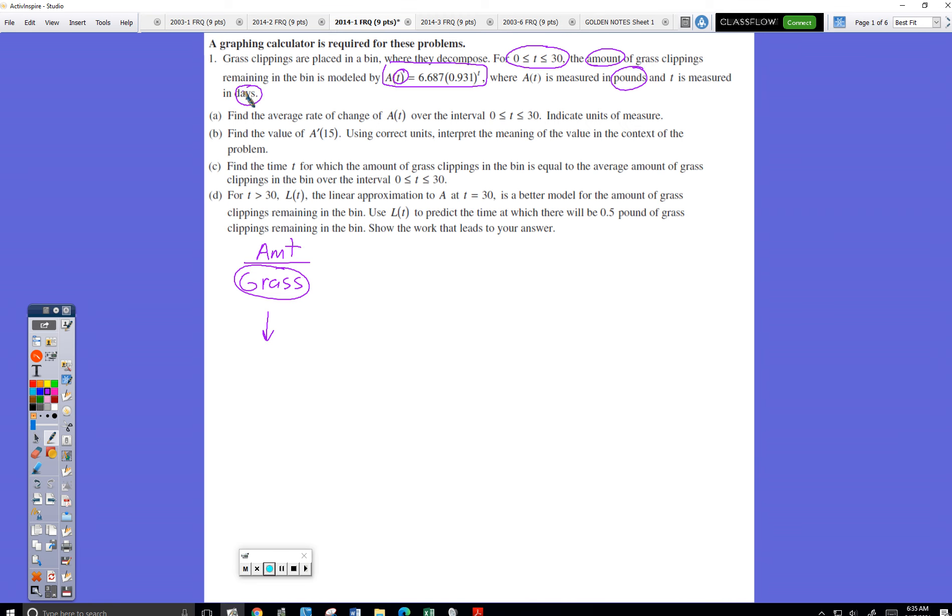Find the average rate of change of A. That means determine, on average, how fast is A changing from this time to this time. You know it's an average rate of change because it's over a time interval. Instantaneous rate of change would be at a given time. And then we're supposed to have units.